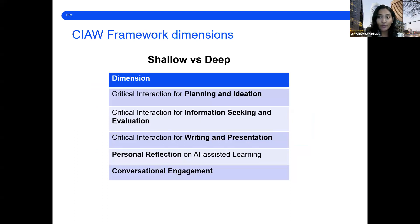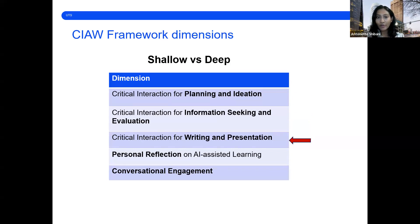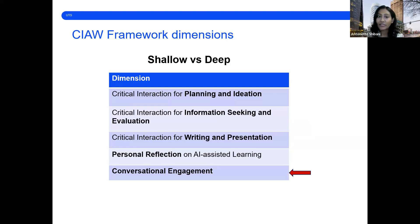This table shows dimensions of the framework where we define shallow versus deep interaction across stages, starting from critical interaction for planning and ideation, for information seeking and evaluation, and for writing and presentation. In addition, we define shallow and deep interactions with AI based on the learner's self-reflection of their process of engagement with AI, and how conversational or transactional their interactions are.